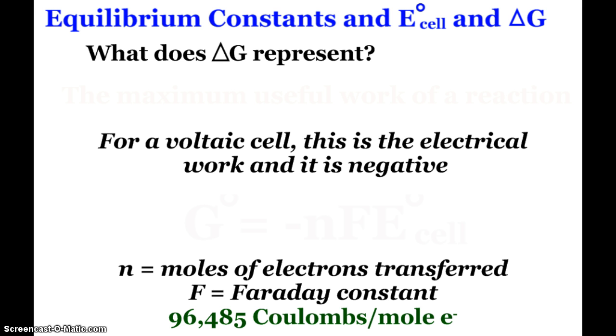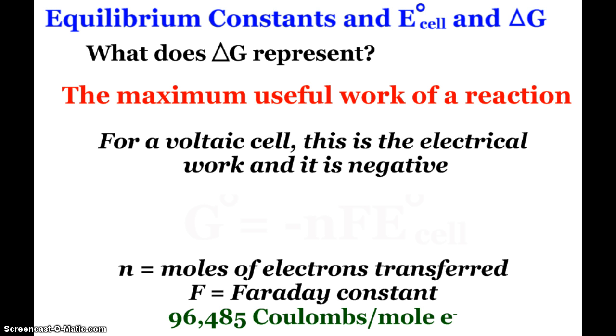First off, what do we mean when we talk about delta G? What does the change in free energy represent? For a chemical reaction, it is the maximum amount of useful work for that reaction. For voltaic cells, this is the electrical work and it is a negative value as work is being done on the surroundings.